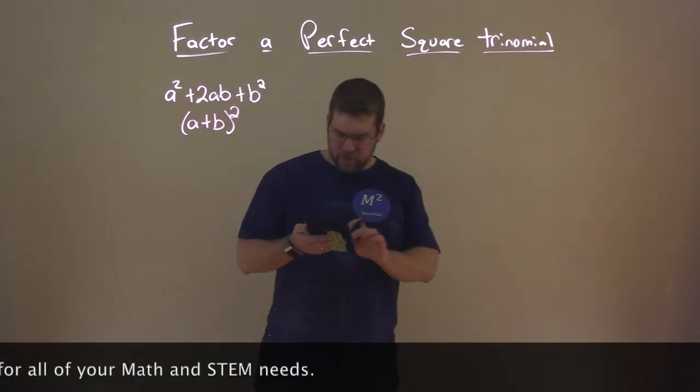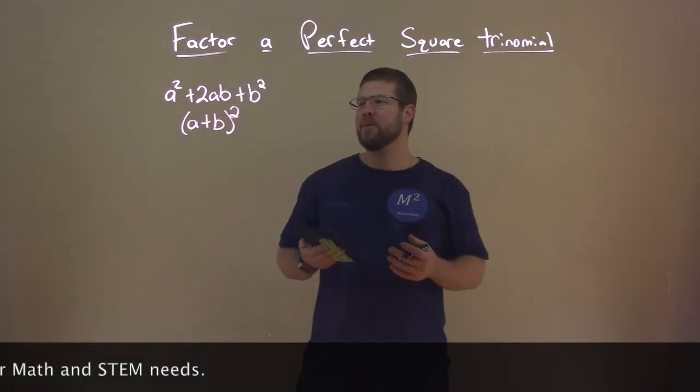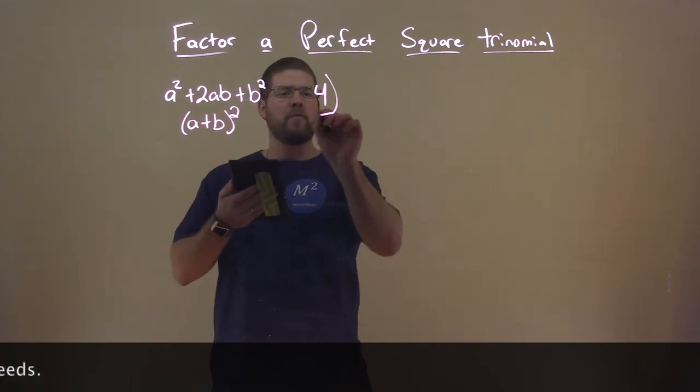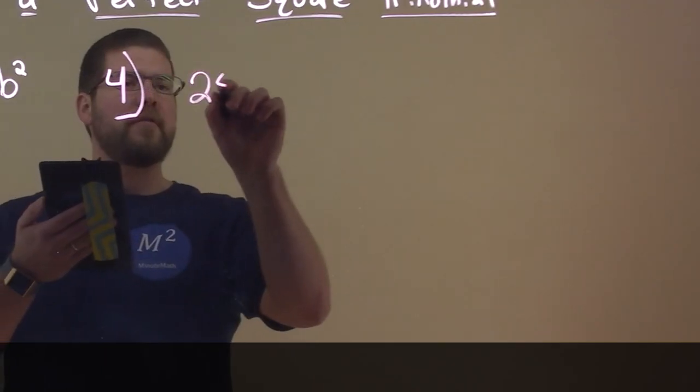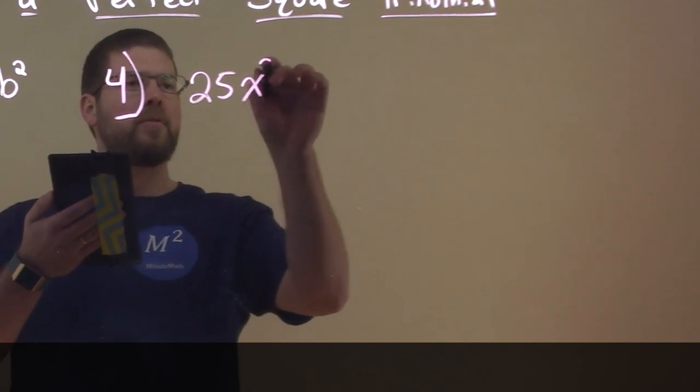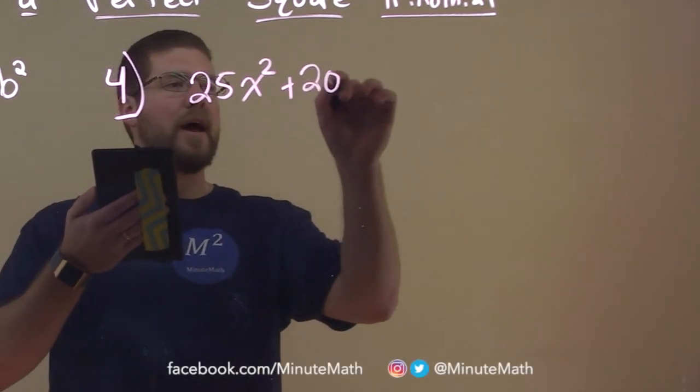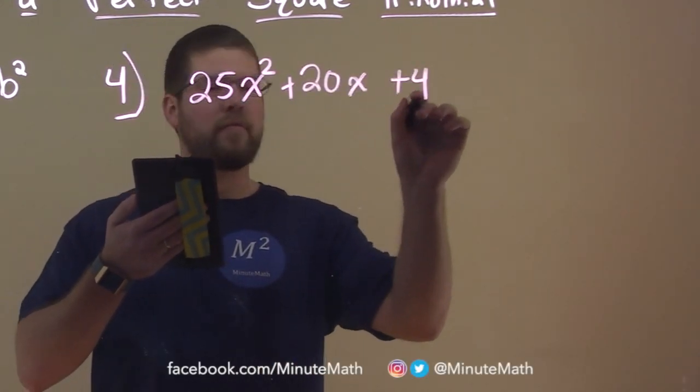Alright, so let's dive into an example and try this. 25x squared plus 20x plus 4.